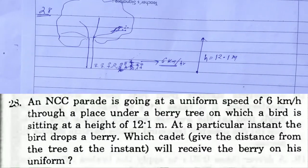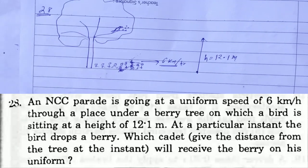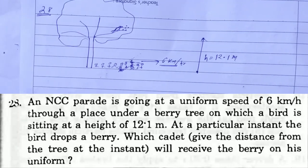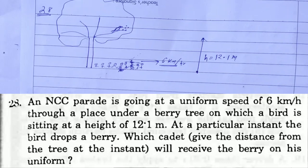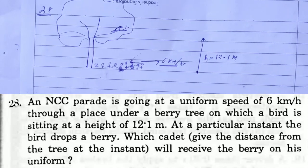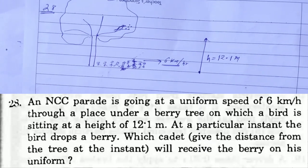HCIMA solution, Chapter 3, Rest in Motion Kinematics, Question Number 28: An NCC parade is going at a uniform speed of 6 km per hour through a place under a berry tree on which a bird is sitting at a height of 12.1 meters. At a particular instant, the bird drops a berry. Which cadet, give the distance from the tree at that instant, will receive the berry on his uniform?